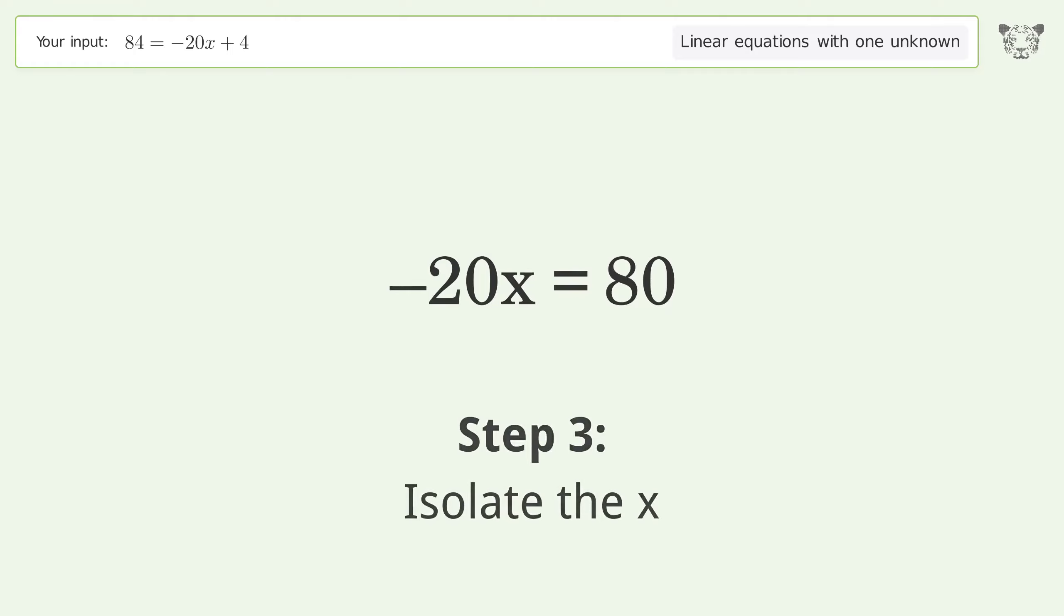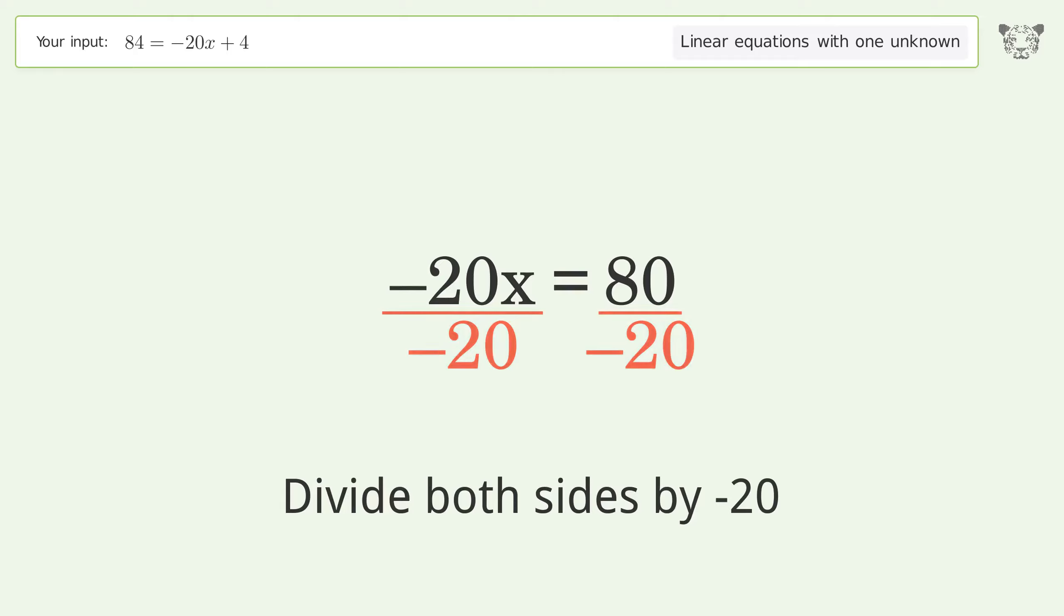Isolate the x. Divide both sides by negative 20. Cancel out the negatives.